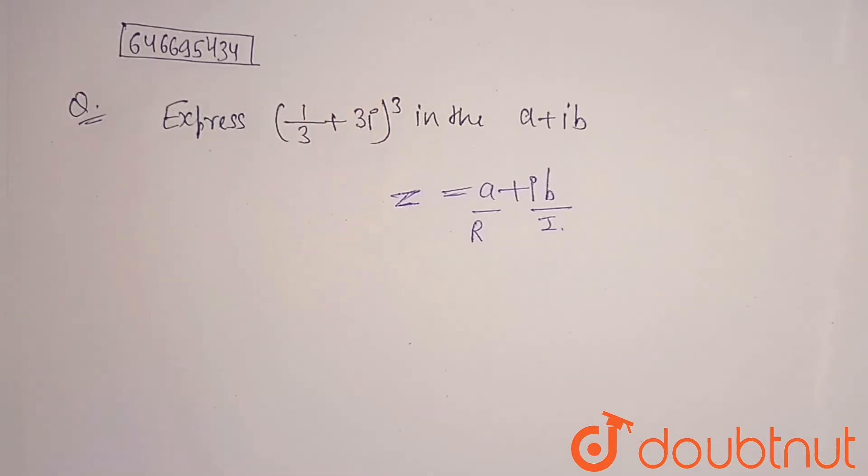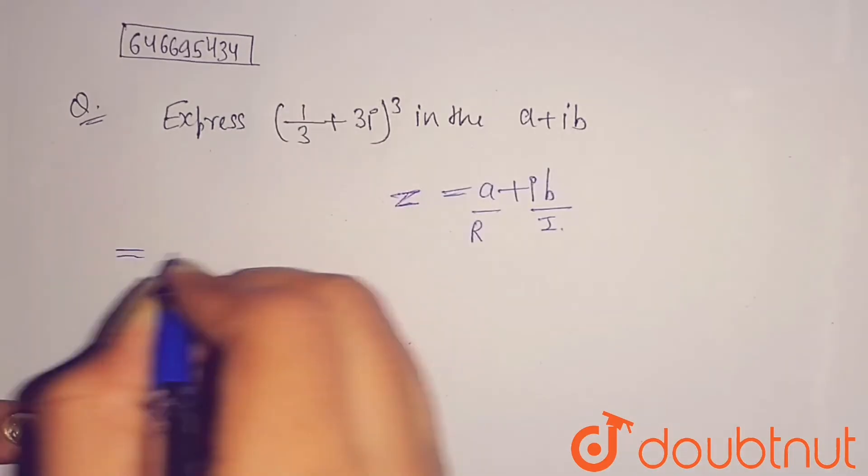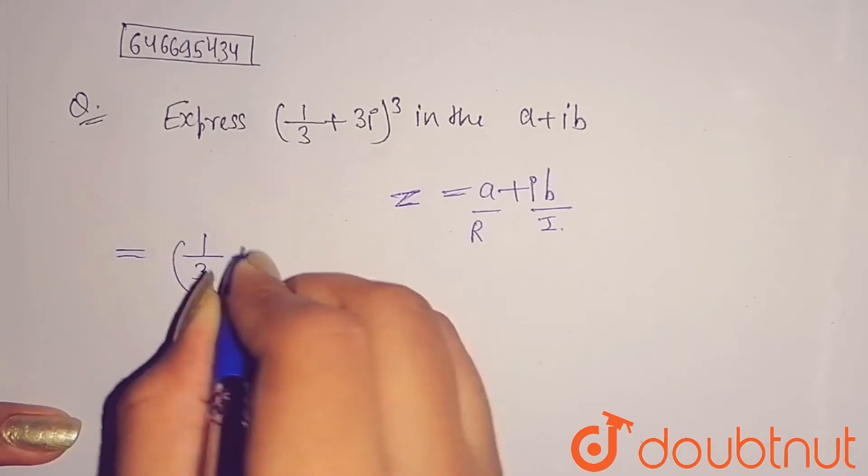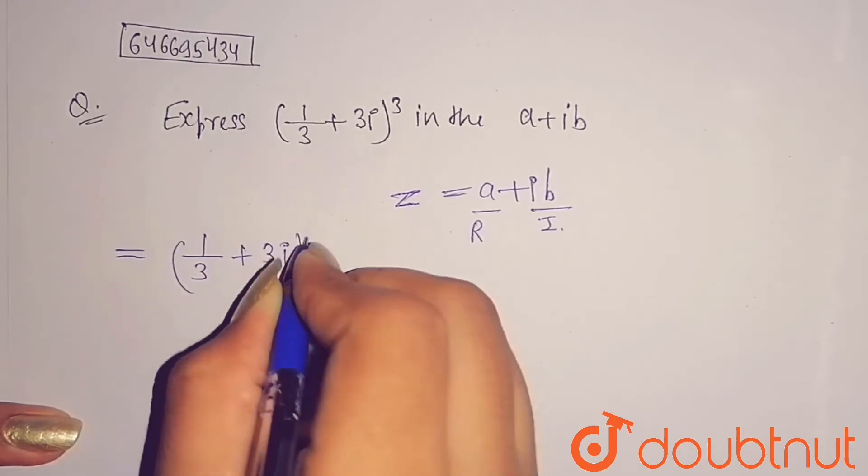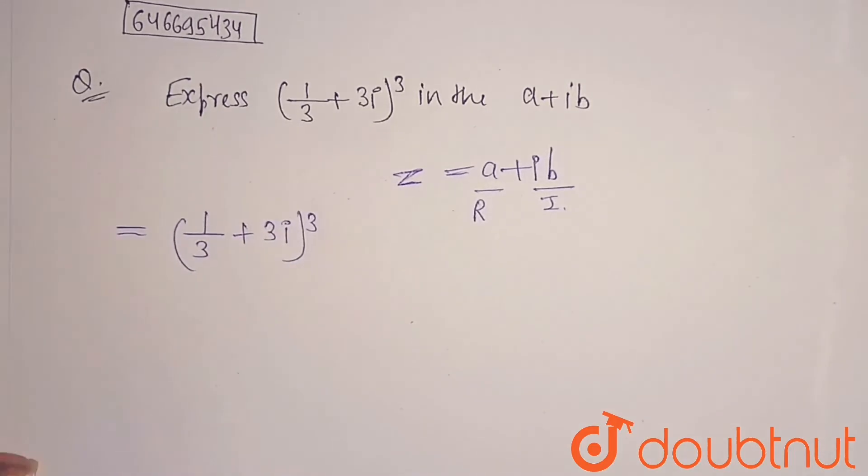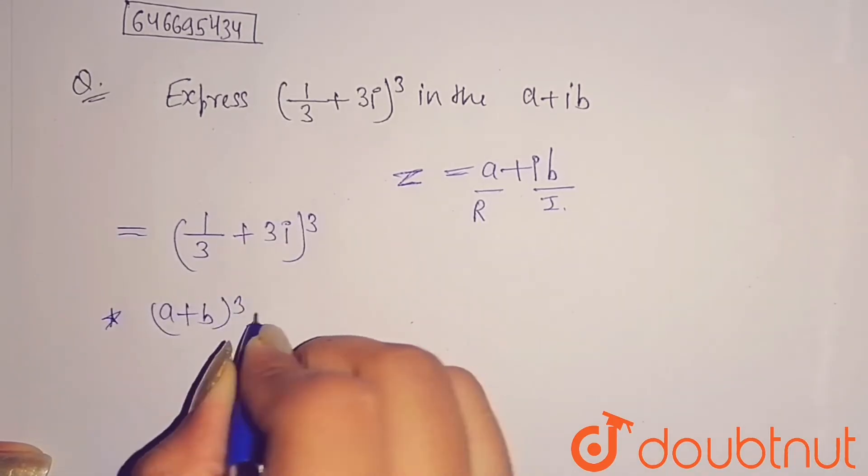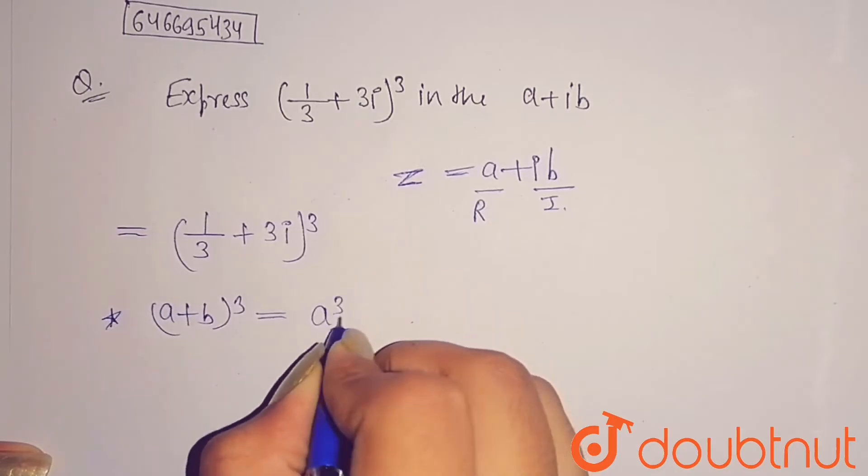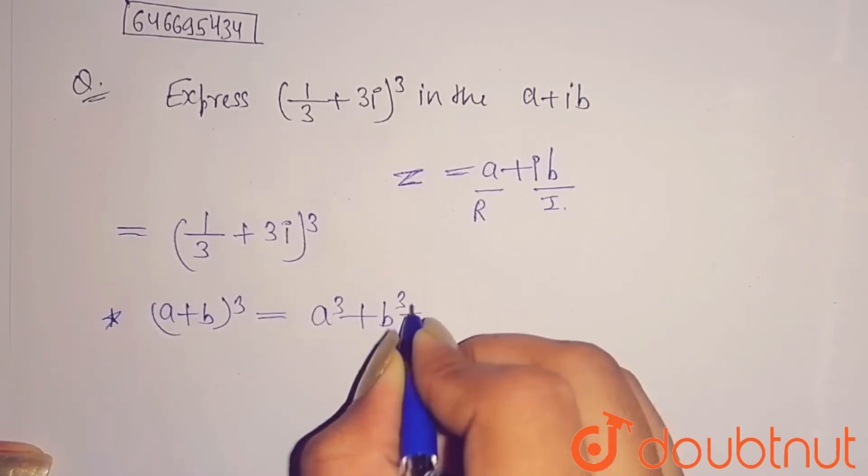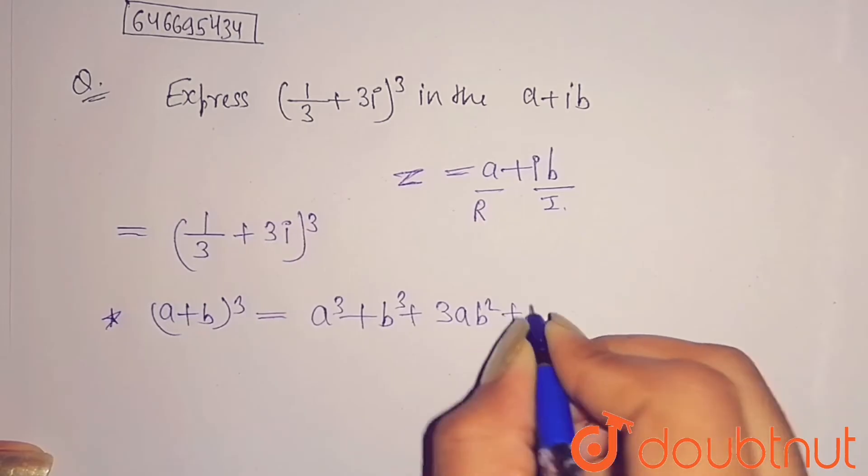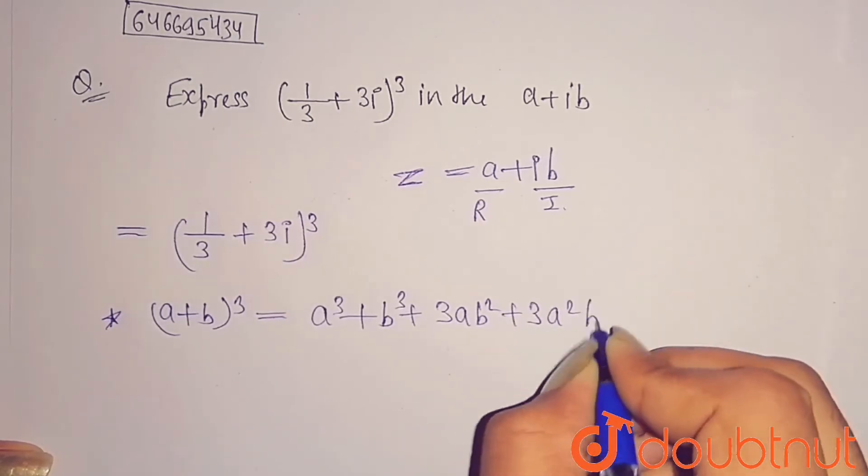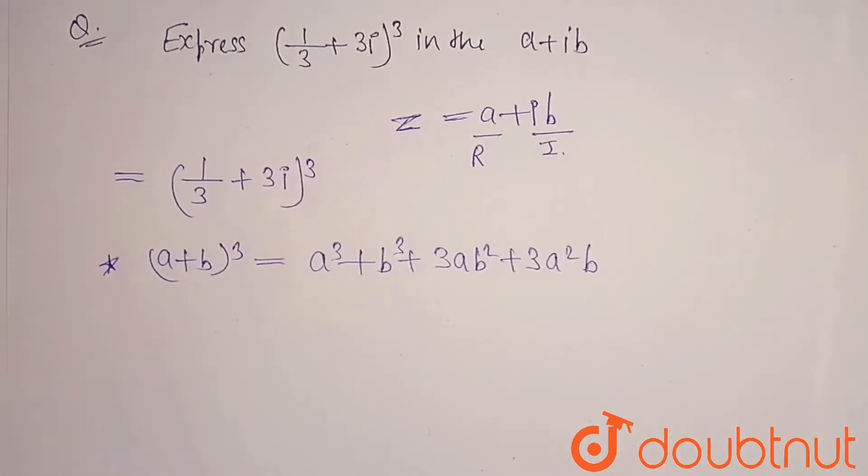The given equation is (1/3 + 3i)³. Now we know the formula of (a+b)³ which equals a³ + b³ + 3ab² + 3a²b. So you have to apply this formula here.